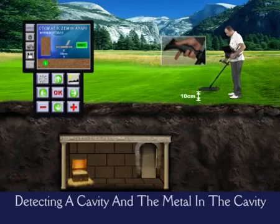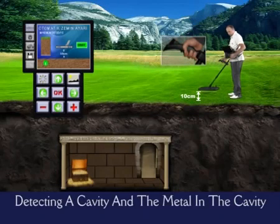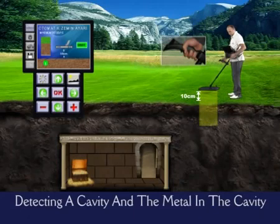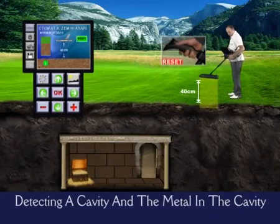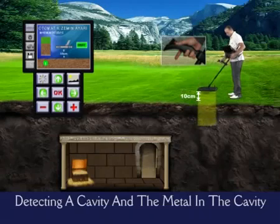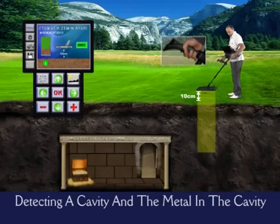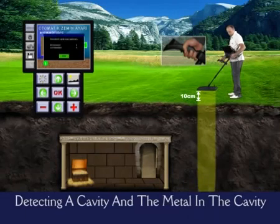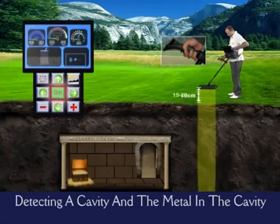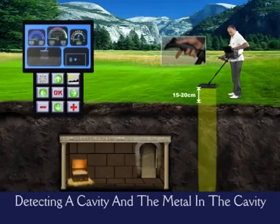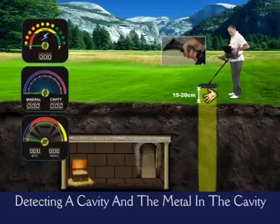Cavities are places like caves, tunnels, cellars, and shelters. Those kinds of structures are shown on the screen as cavities. In addition, the system is able to discriminate metals in a cavity and show them on a 3D screen as graphs. For example, you can see a box of gold inside the cavity.